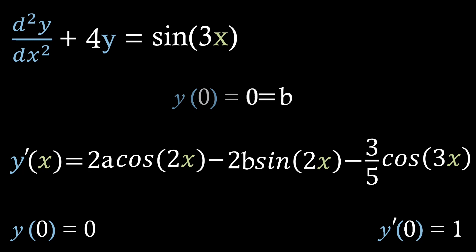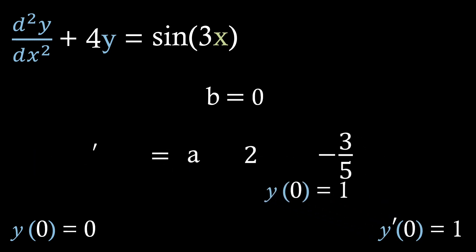This example is quite nice, as we don't need to solve a simultaneous equations problem at the end. Moving on, if we put our second initial conditions into our differentiated general solution, we get this expression, which we can easily solve for a by adding 3 fifths to each side and then dividing by 2.